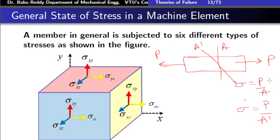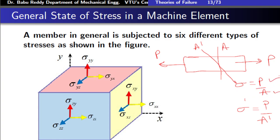Therefore, we say stress is a tensor quantity because it has one magnitude and two directions — the load P has a direction and the area also has a direction, and together P by A is the magnitude. The direction of area is perpendicular to it, basically the inclination of the area. So technically, if you want to find the stress at any point, you should calculate all possible stresses by orienting the area in all possible directions.